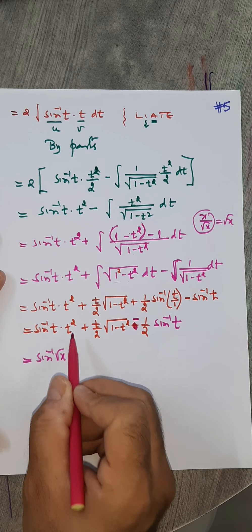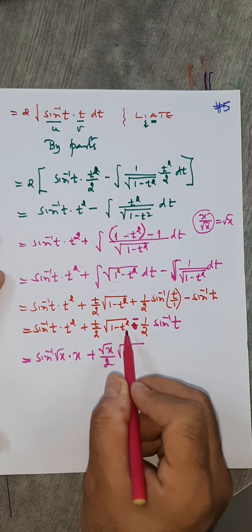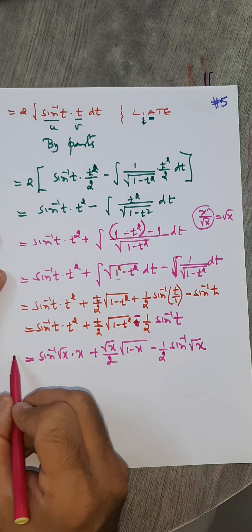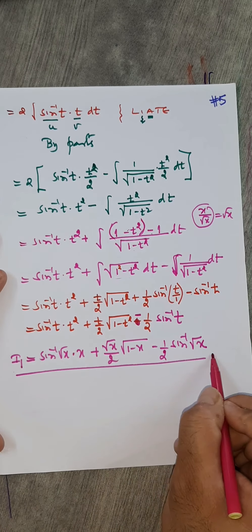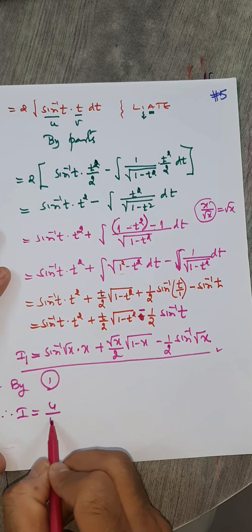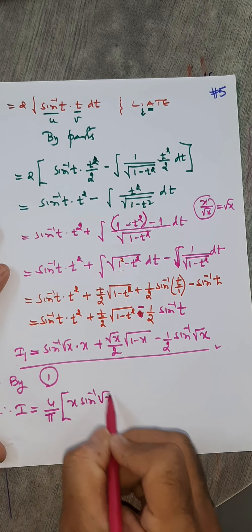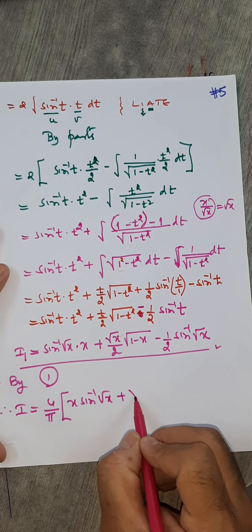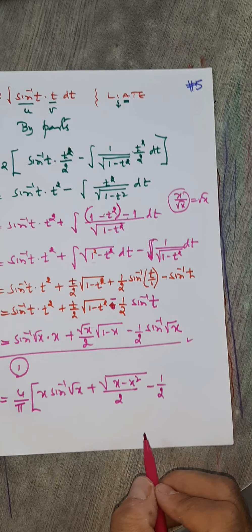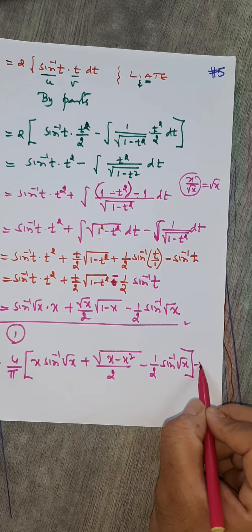Substituting t = √x: I₁ = sin⁻¹√x · x + (√x/2)·√(1−x) minus (1/2)·sin⁻¹√x. Therefore the full integral I = (4/π) times I₁ minus x plus c. Combining sin⁻¹√x terms: (4/π) times [x·sin⁻¹√x + (√x/2)·√(1−x) − (1/2)·sin⁻¹√x] minus x plus c.